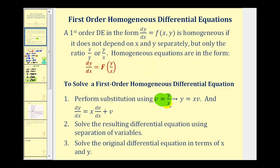And since we'll also have to perform a substitution for dy/dx, we can multiply both sides of this equation by x to get y equals x times v. Then to find dy/dx, we perform implicit differentiation with the product rule to get dy/dx equals x times dv/dx plus v. We'll use these two equations to perform a substitution, then solve using separation of variables, and find the final solution in terms of x and y.